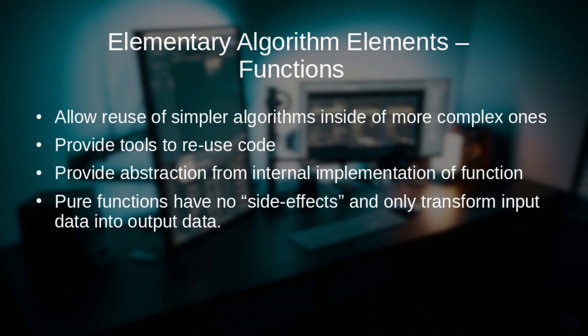The term 'procedure' denoted primarily functions that would not return results and instead produce other actions called side effects. An example of a side effect in programming is writing some data to output or a database. In this course, I will use the term 'function' to refer to sub-algorithms regardless of their inputs, outputs, or side effects. With these elementary blocks and functions as a tool of abstraction, you can implement any algorithm. This programming approach is commonly referred to as imperative programming. Later in this lecture, I will present the implementation of this style of programming in Python.